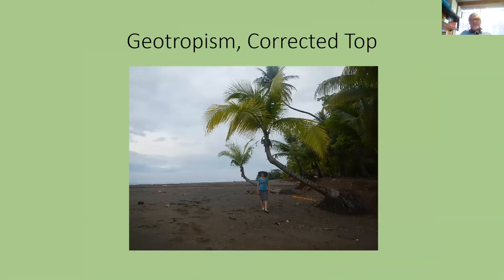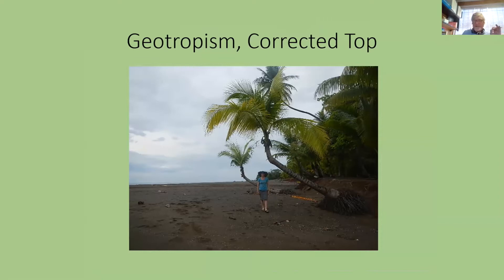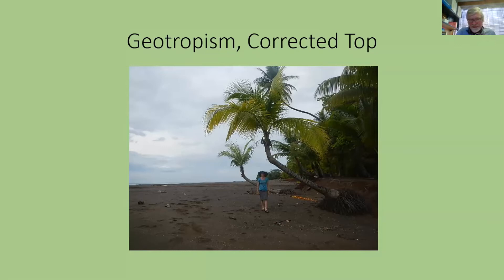Geotropism refers to the fact that some trees' leaders will always grow opposite the force of gravity. So if a tree started leaning and then stabilized — say it came over during a rainstorm when soil was saturated, then dried up — the tip will grow straight up. You will see a corrected lean, which is a good sign: the top is correcting, meaning it has been stabilized for a long time. Here's a coconut palm in Costa Rica where the root ball fell but the growing point grew straight up, illustrating this concept.